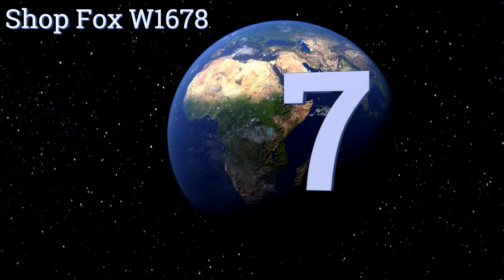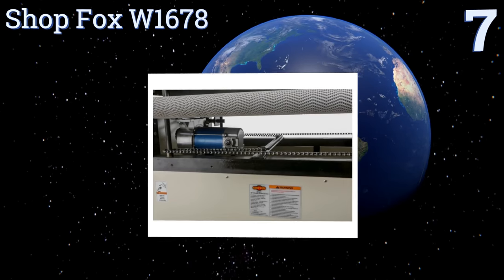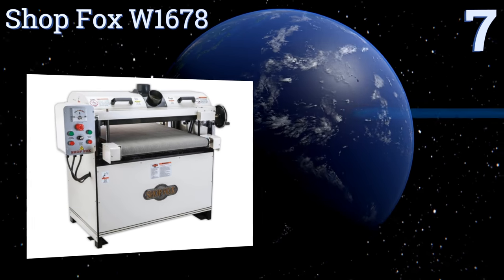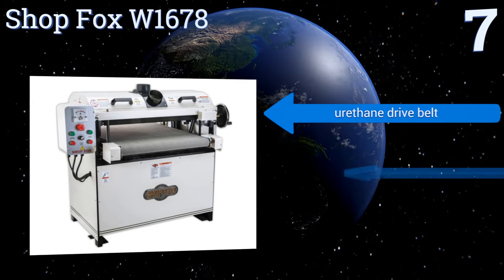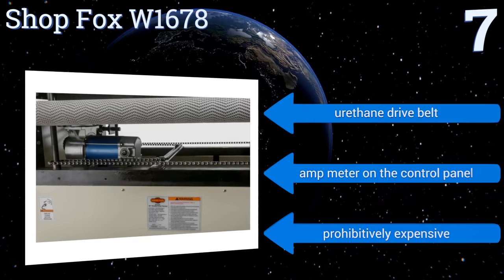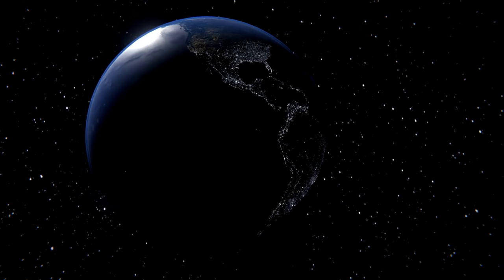Starting off our list at number seven, the ShopFox W1678 is intended purely for the professional class or for the extraordinarily wealthy hobbyist. Its five horsepower motor turns a pair of 26-inch drums which create a lot of dust. Fortunately, the unit also has a pair of four-inch dust ports for collection. Comes with a urethane drive belt and an amp meter on the control panel, but it is prohibitively expensive.